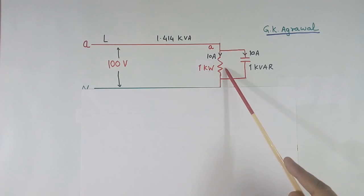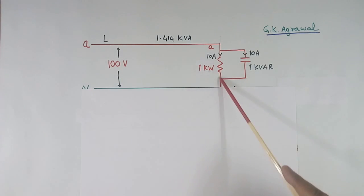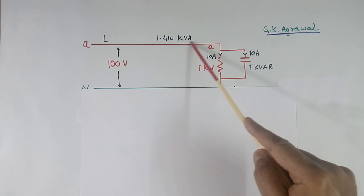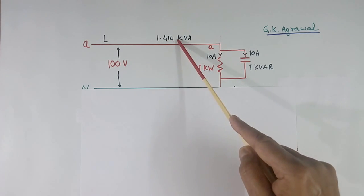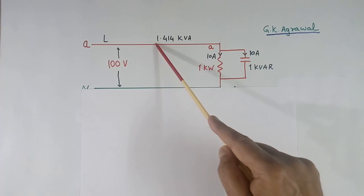This is similar circuit just now I have shown. This is input 100 V. This is the resistive load with 1 kW power. This is capacitive load with 1 kVAR reactive power. And apparent power is 1.414 kVA. Active power, reactive power, VA.